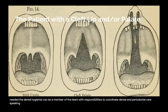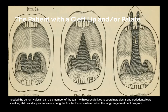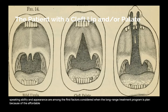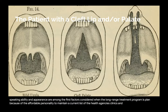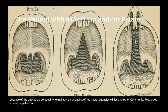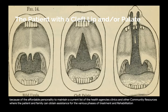Speaking ability and appearance are among the first factors considered when the long-range treatment program is planned, because the objective is to help the patient lead a normal life. Dental personnel need to maintain a current list of the health agencies, clinics, and other community resources where the patient and family can obtain assistance for the various phases of treatment and rehabilitation.